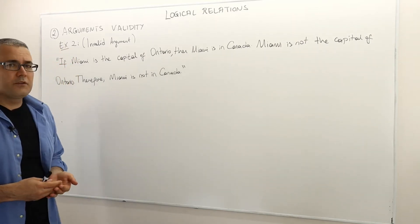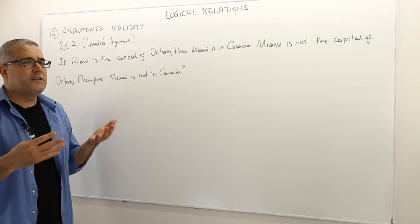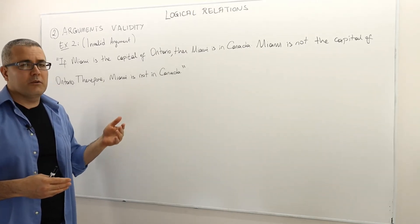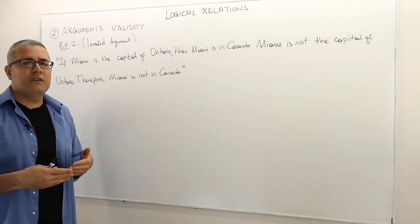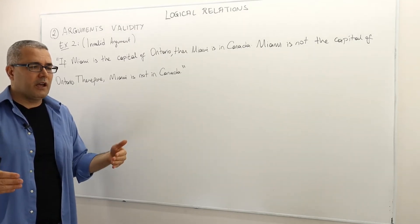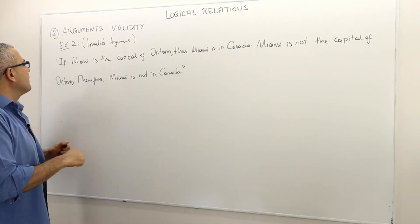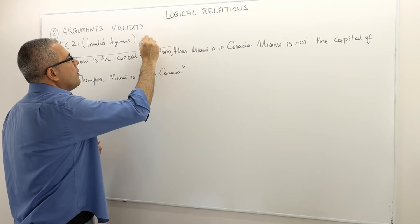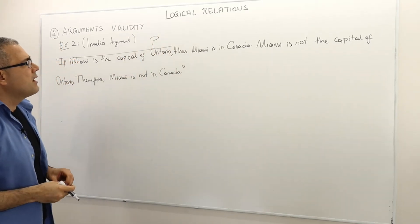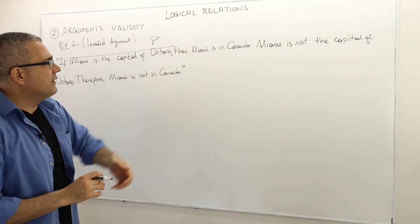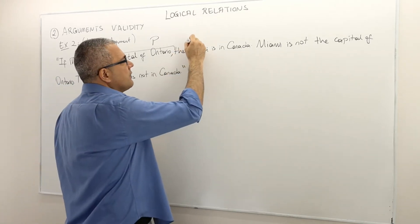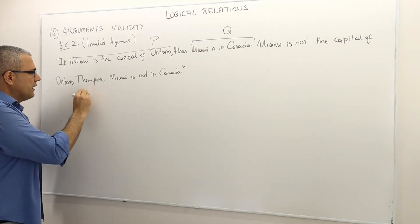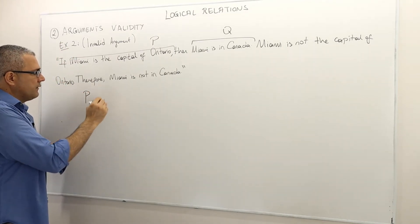First, we need to understand and distinguish what atomic sentences are in this argument. Then second, we need to build and write down the truth table. So 'Miami is the capital of Ontario' — let's call this atomic sentence P. Then 'Miami is in Canada' is a new atomic sentence, let's call it Q. So the first premise is basically P implies Q.